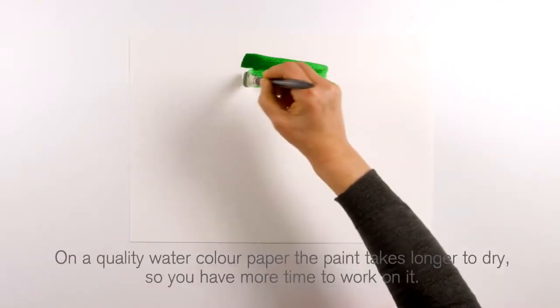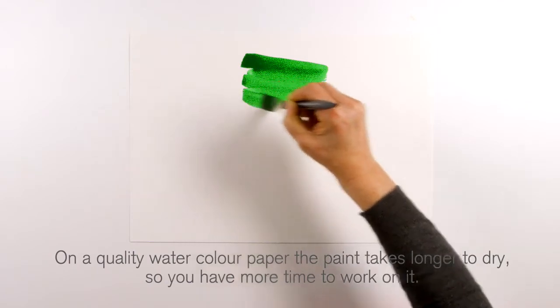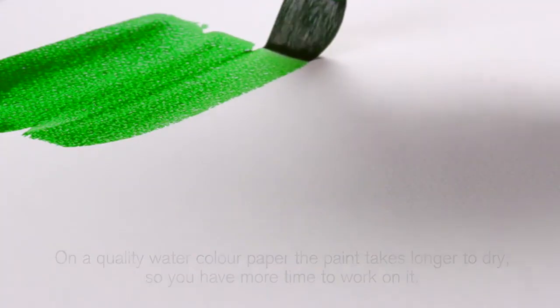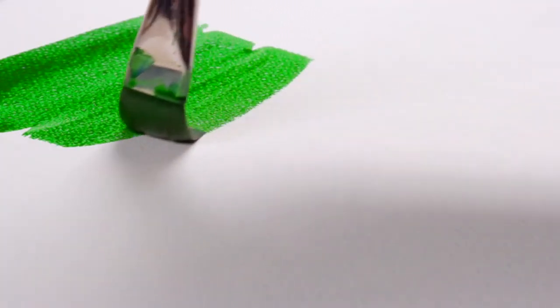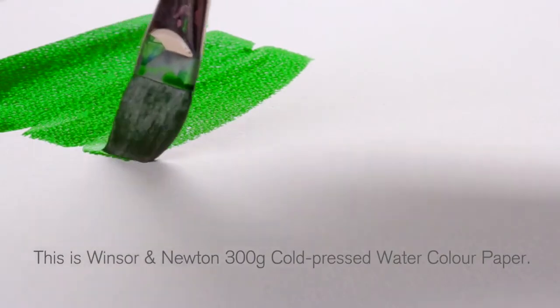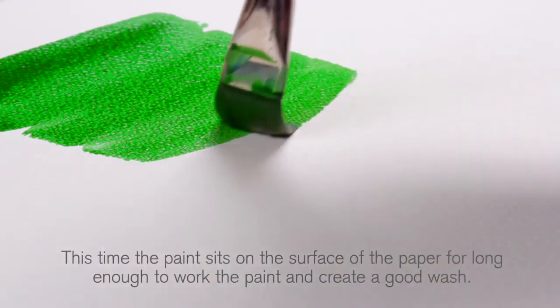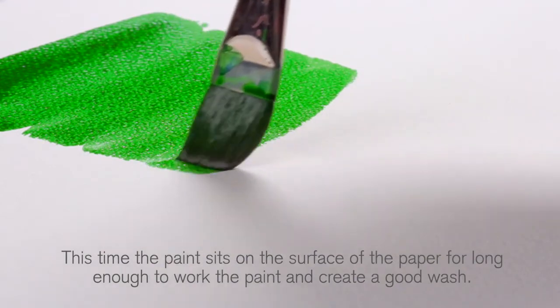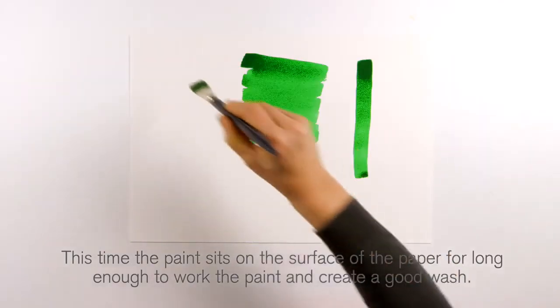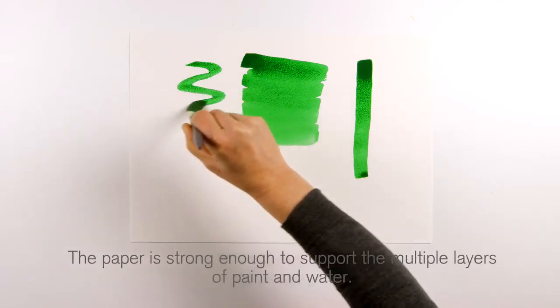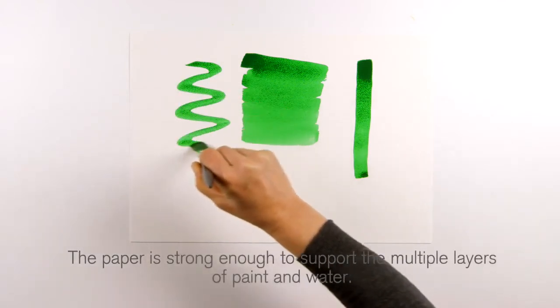On a quality watercolor paper, the paint takes longer to dry so you have more time to work on it. This is Winsor & Newton 300 gram cold pressed watercolor paper. This time the paint sits on the surface of the paper for long enough to work the paint and create a good wash. The paper is strong enough to support the multiple layers of paint and water.